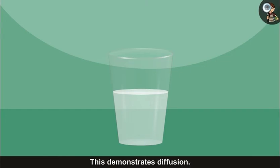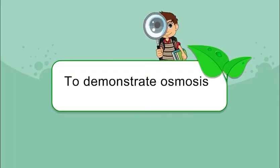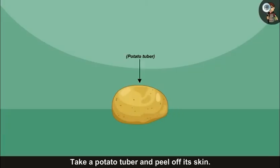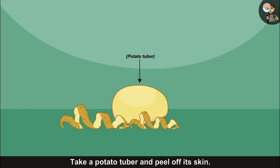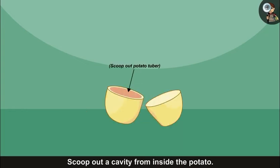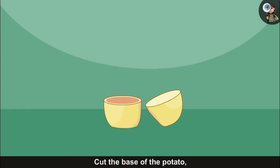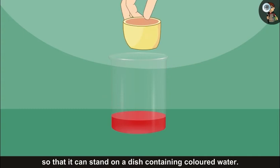To demonstrate osmosis, take a potato tuber and peel off its skin. Scoop out a cavity from inside the potato. Cut the base of the potato so that it can stand on a dish containing colored water.